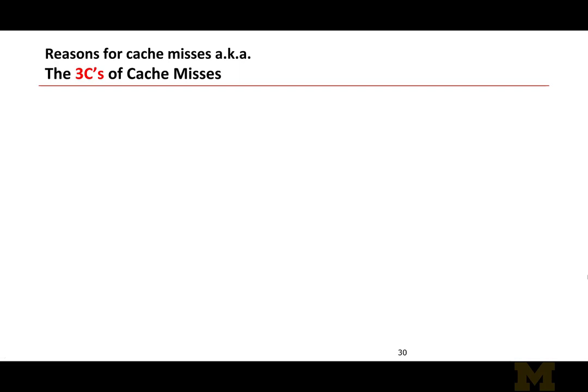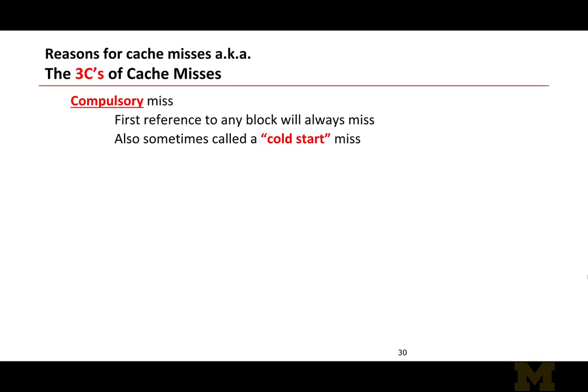What are the reasons for cache misses? It's worthwhile to understand these reasons because that can help us redesign the cache and improve performance. There are three types of cache misses. The first one is called the compulsory miss. When a program starts, the processor cache is initialized to an empty state. So when a program accesses an address X for the first time, it is guaranteed to miss the cache, because this is the first time we're accessing that cache block and it hasn't been brought in from main memory. The miss due to accessing a cache block for the first time is called the compulsory miss.